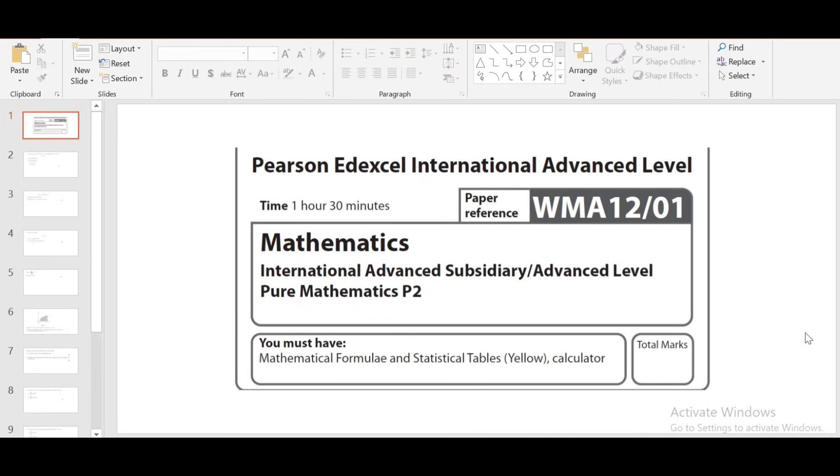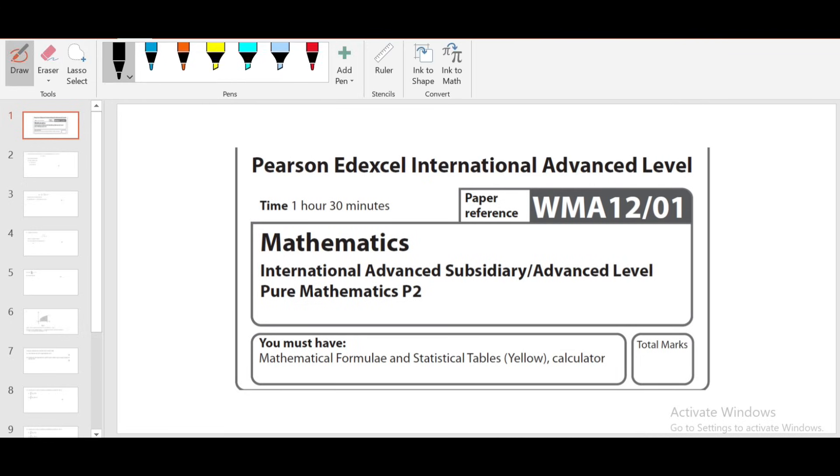Hi, welcome to my channel Pi by Mimaj. This is Bhaiji Vasudevan. Here we are going to solve October 2021 Pure Math 2 paper. This paper consists of 10 questions. Let's jump into question number 1.